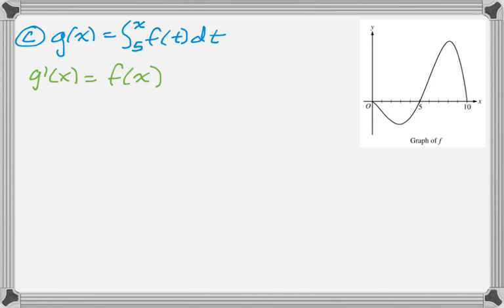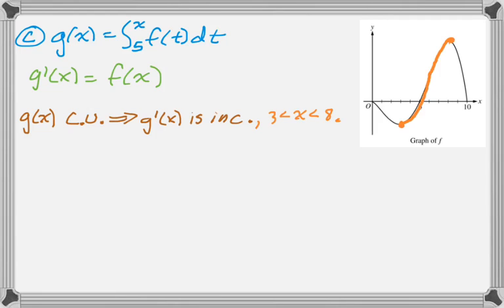We know that g(x) is going to be concave up whenever g'(x) is increasing. We look at the graph of f(x), which is the same as the graph of g'(x), and it's clearly increasing between those points. That's on the interval from 3 to 8, and 3 and 8 are actually given in that paragraph.